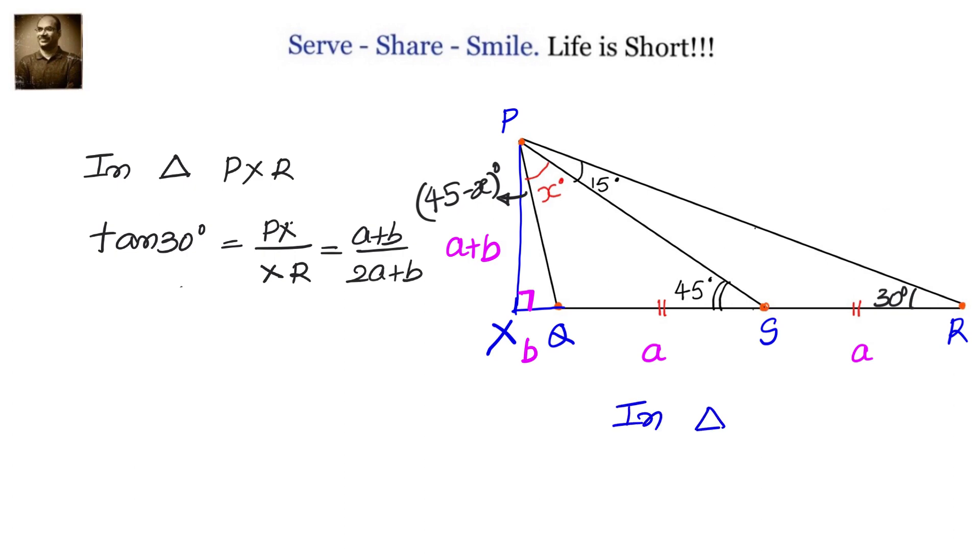Let us go to triangle PXQ and see what is tan of 45 minus X. That is opposite by adjacent which equals XQ by PX which is B by A plus B.